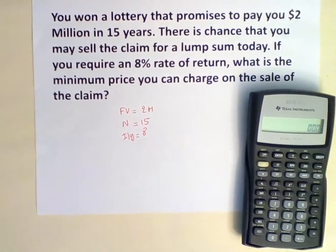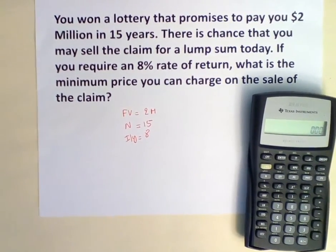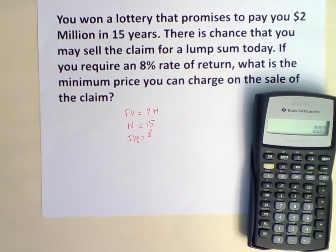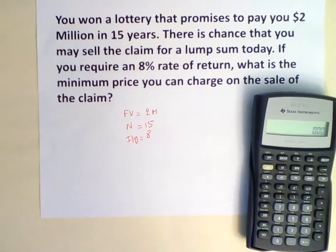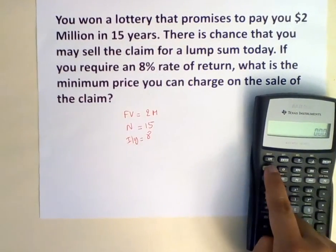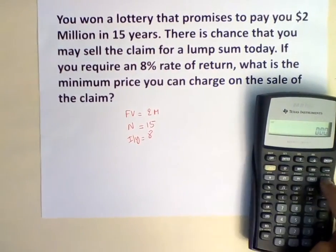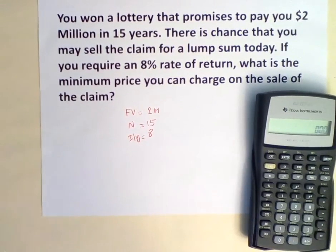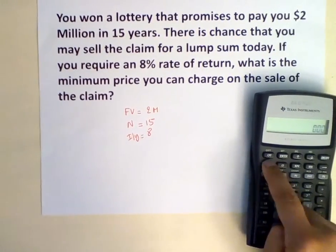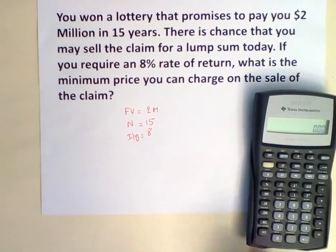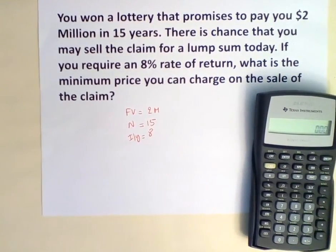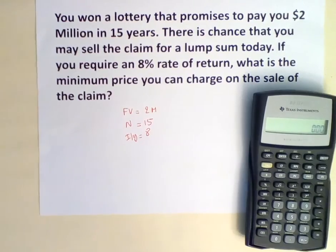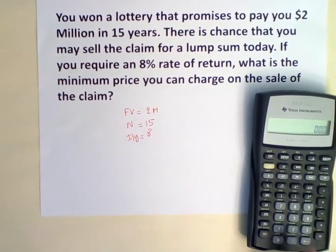Before we do anything, it is very good practice to always clear our work. To do this, you hit 2nd, then FV, to clear time value of money calculations. Then 2nd, CEC, to clear all your work. Now the financial calculator is ready.